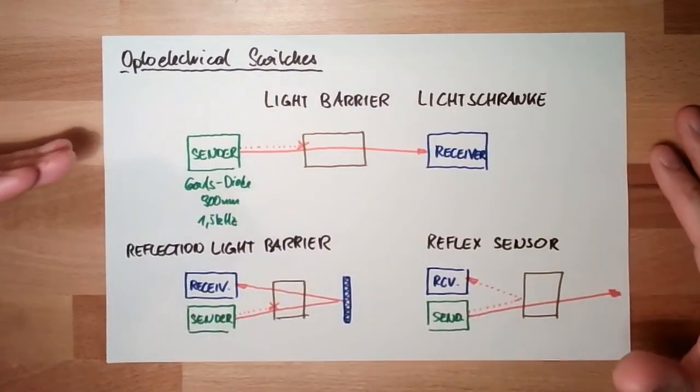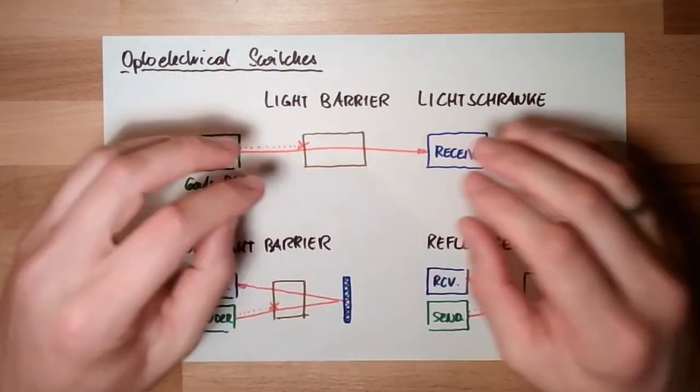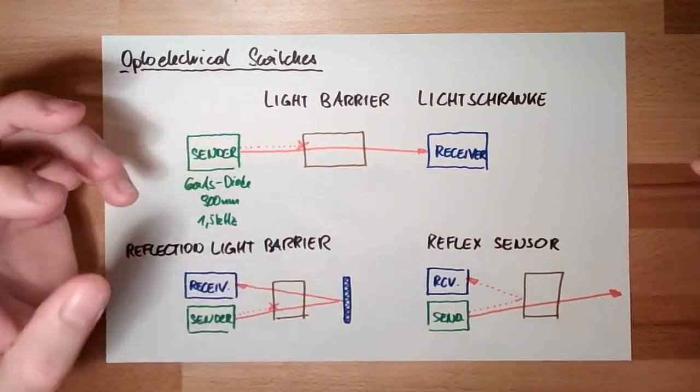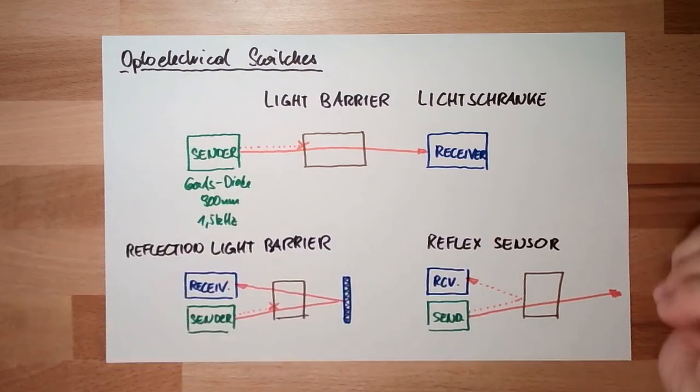Optoelectrical switches can also scan a wide wide area. The sender and receiver might be meters apart. This cannot be easily done with some proximity switches or something like this. So they have their field. Next time we are going to talk about ultrasonic switches. For this time, thank you very much for listening and goodbye.